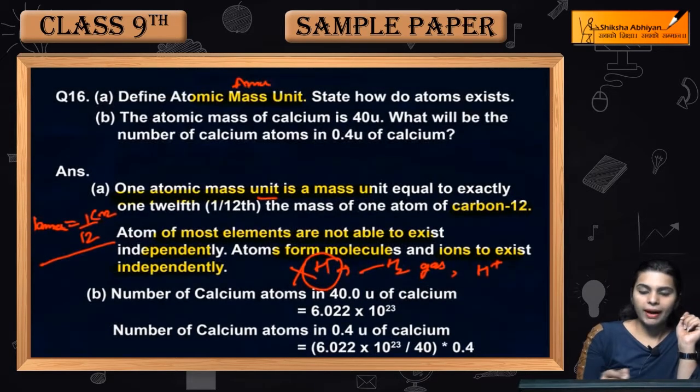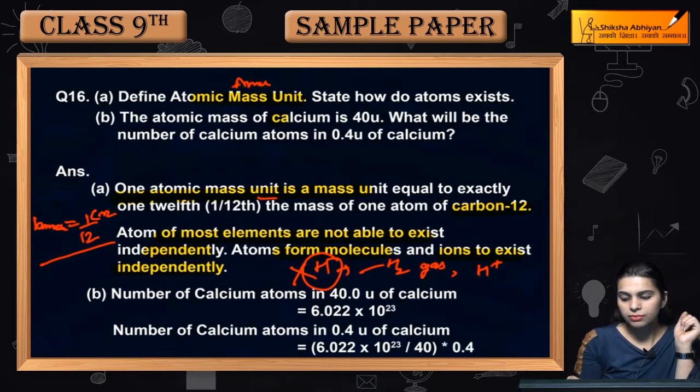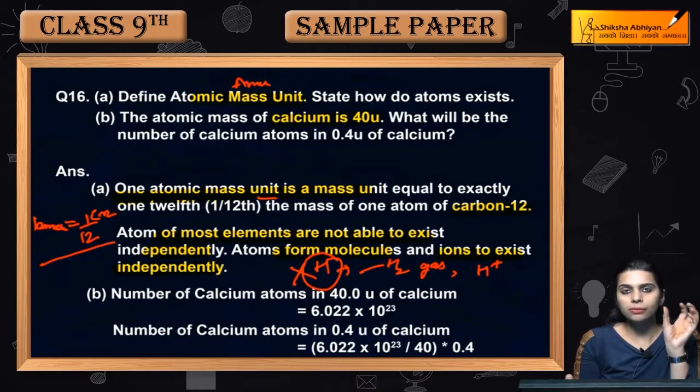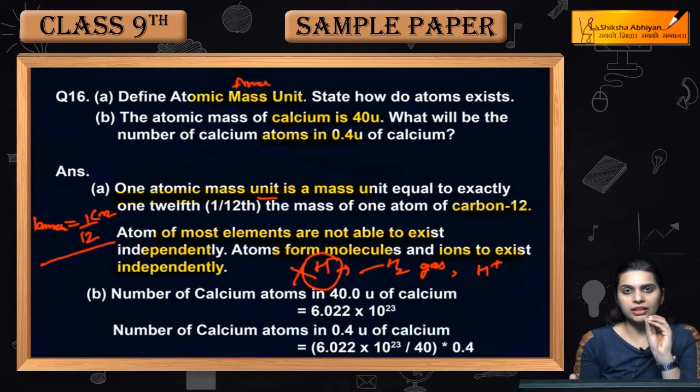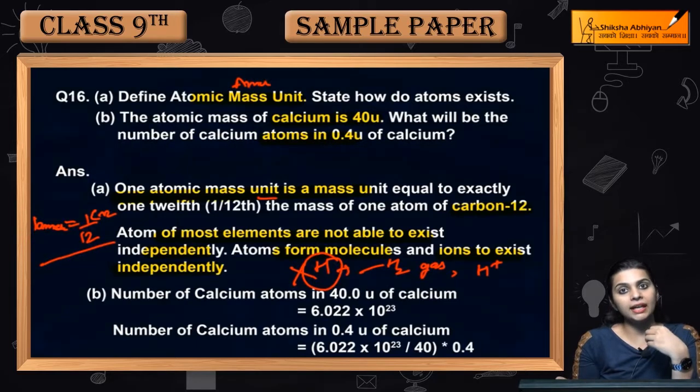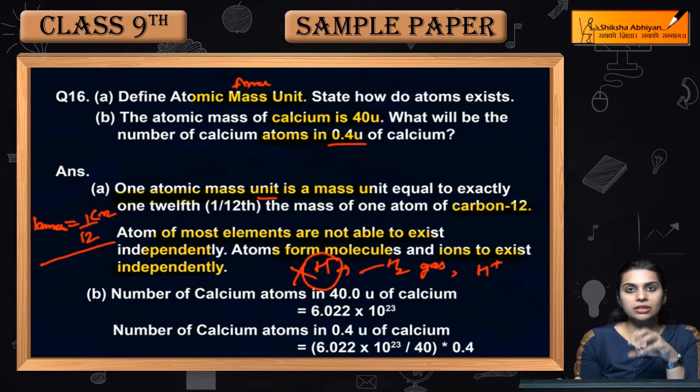Now next is part B. The atomic mass of calcium is 40u. What will be the number of calcium atoms in 0.4u of calcium? That means the amount of calcium is 40, we know how many atoms in it, but now we have to tell that how many atoms in our calcium are 0.4u in our calcium.